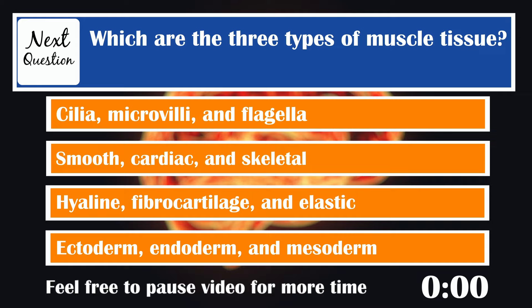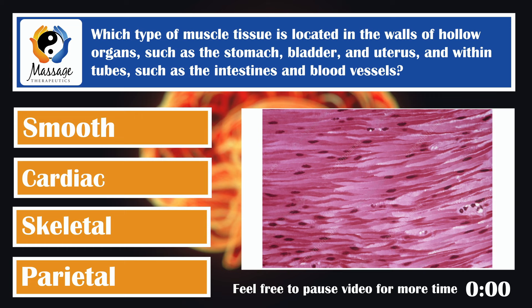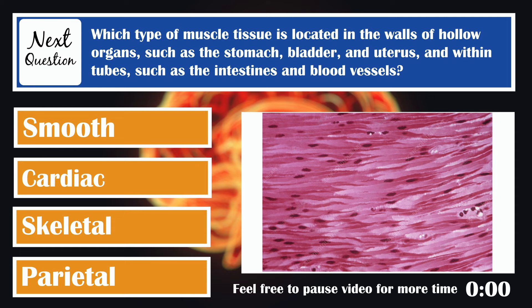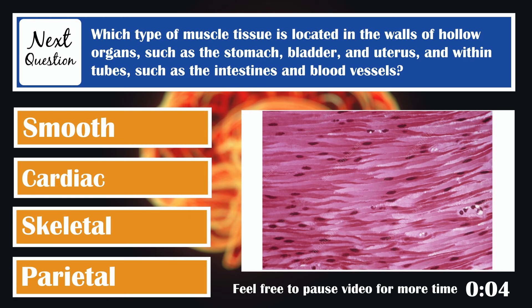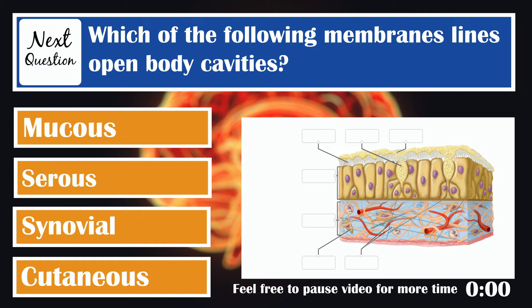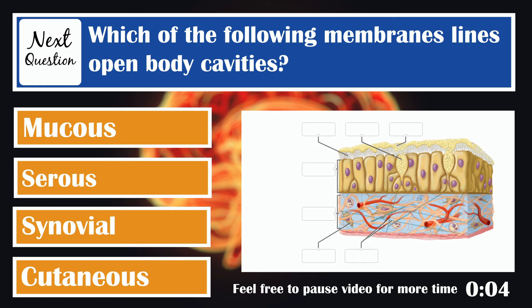Which are the three types of muscle tissue? Smooth, cardiac, and skeletal. Which type of muscle tissue is located in the walls of hollow organs such as the stomach, bladder, and uterus, and within tubes such as the intestines and blood vessels? Smooth muscle. Which of the following membranes lines open body cavities? Mucous membranes.